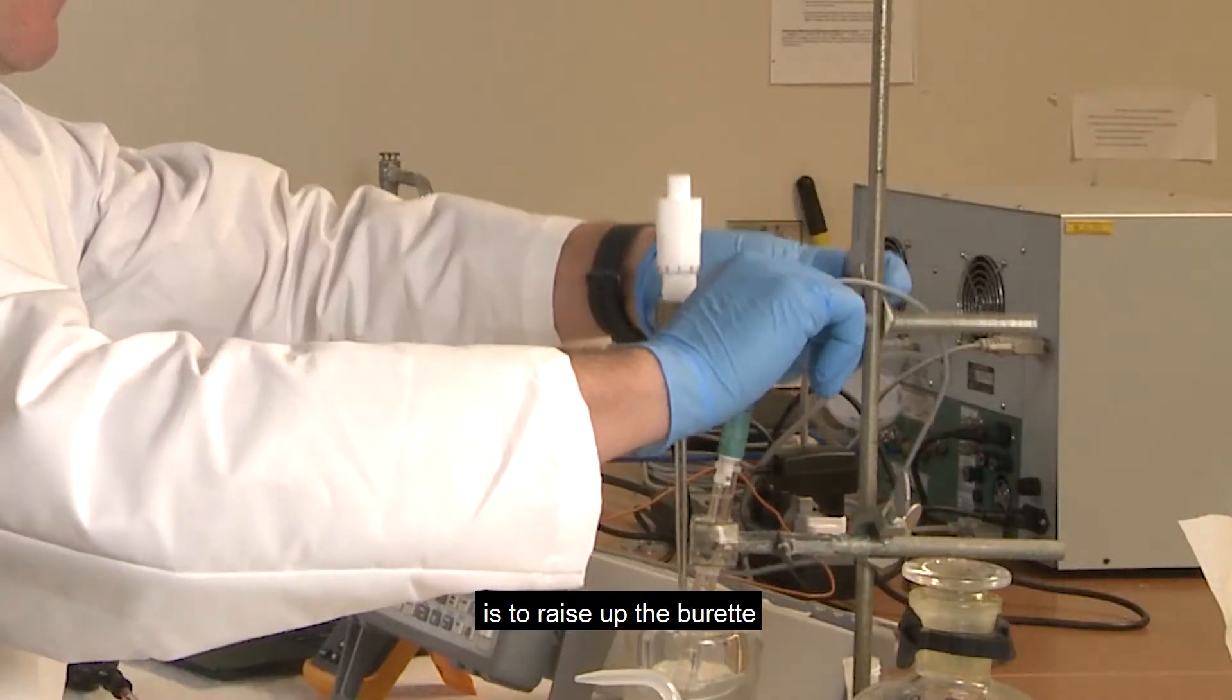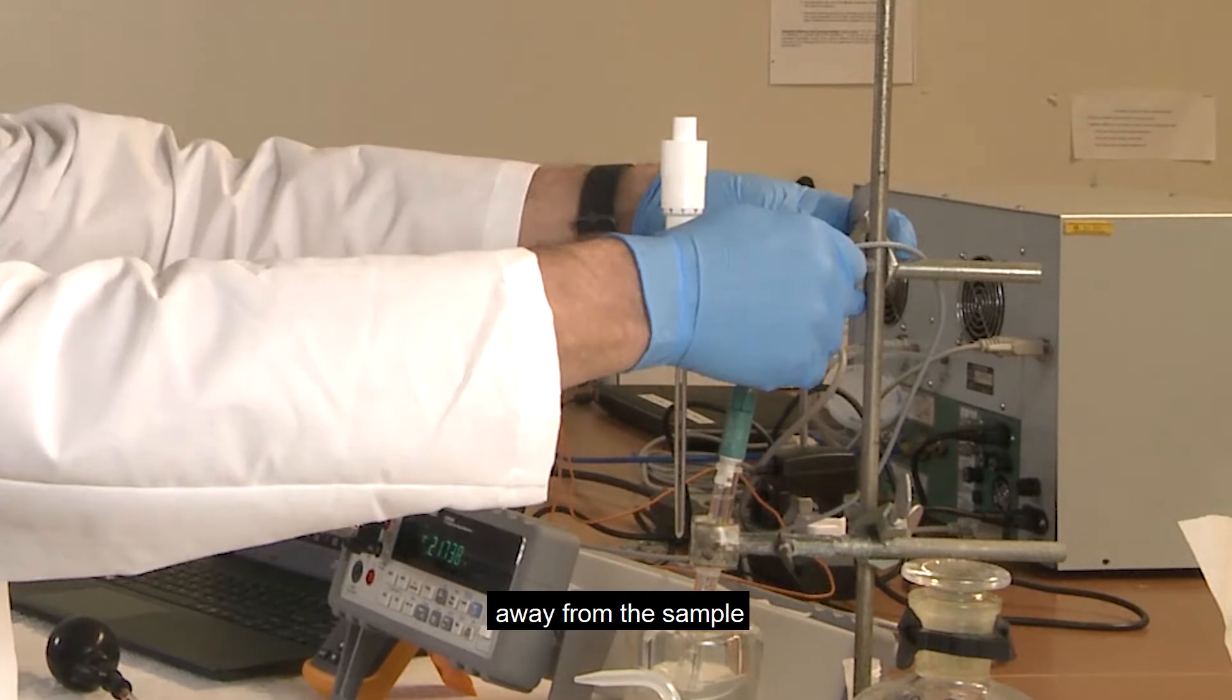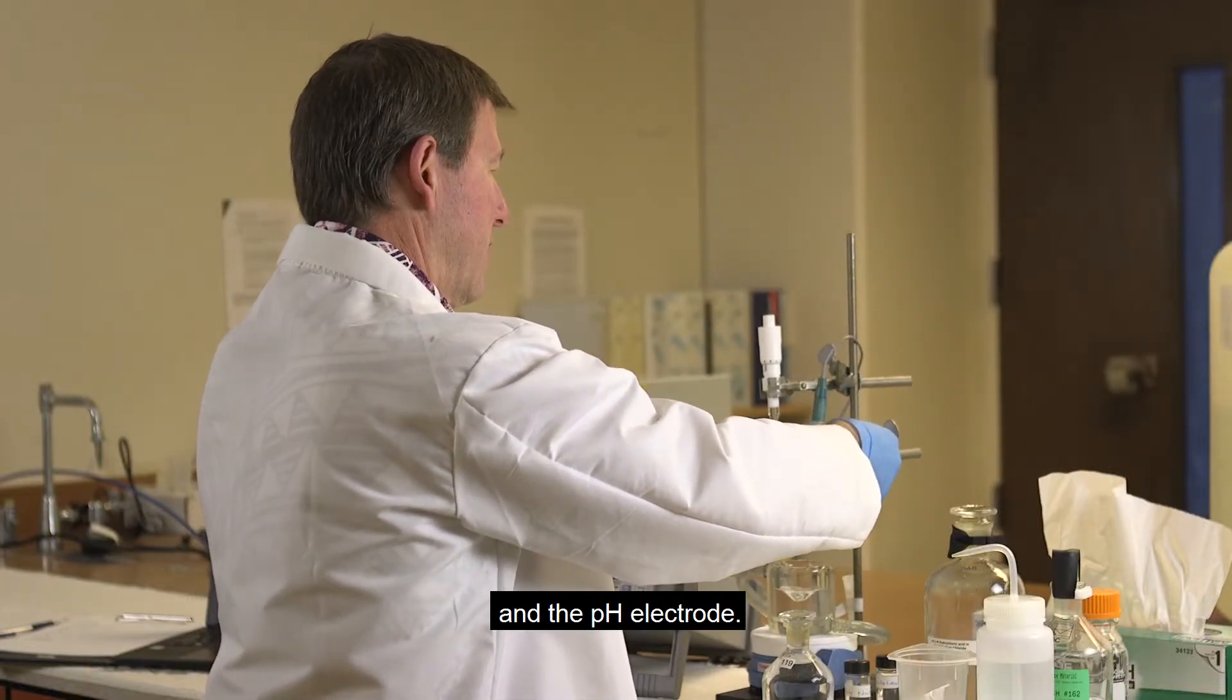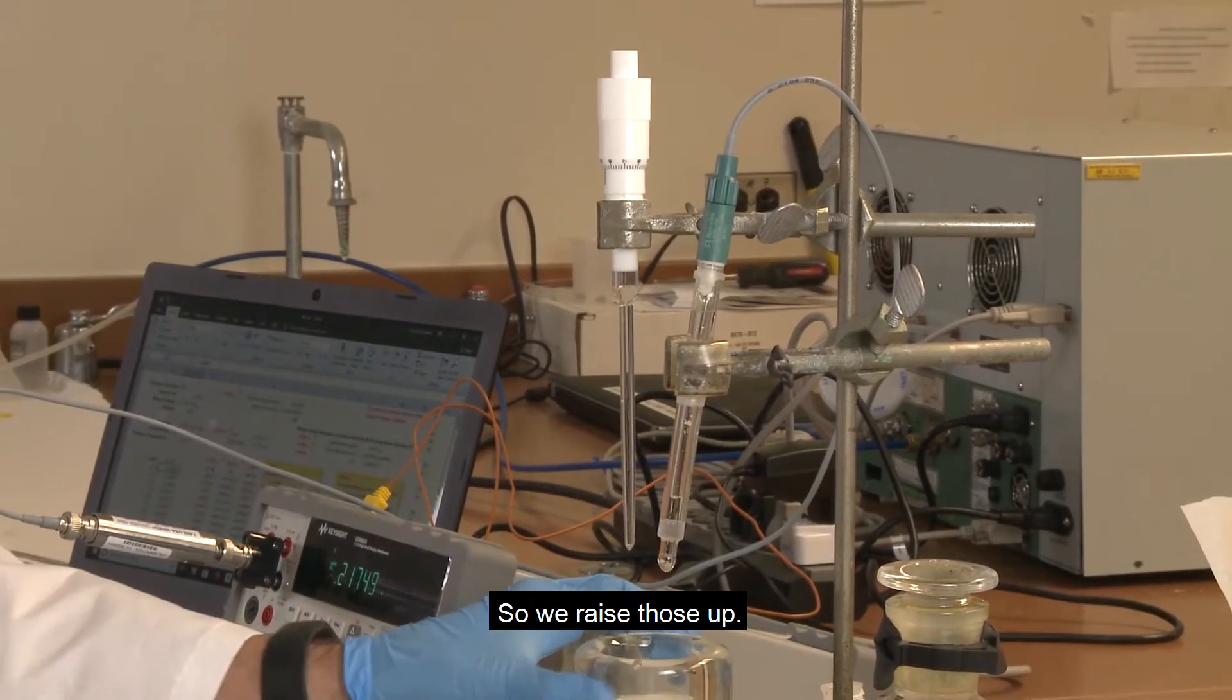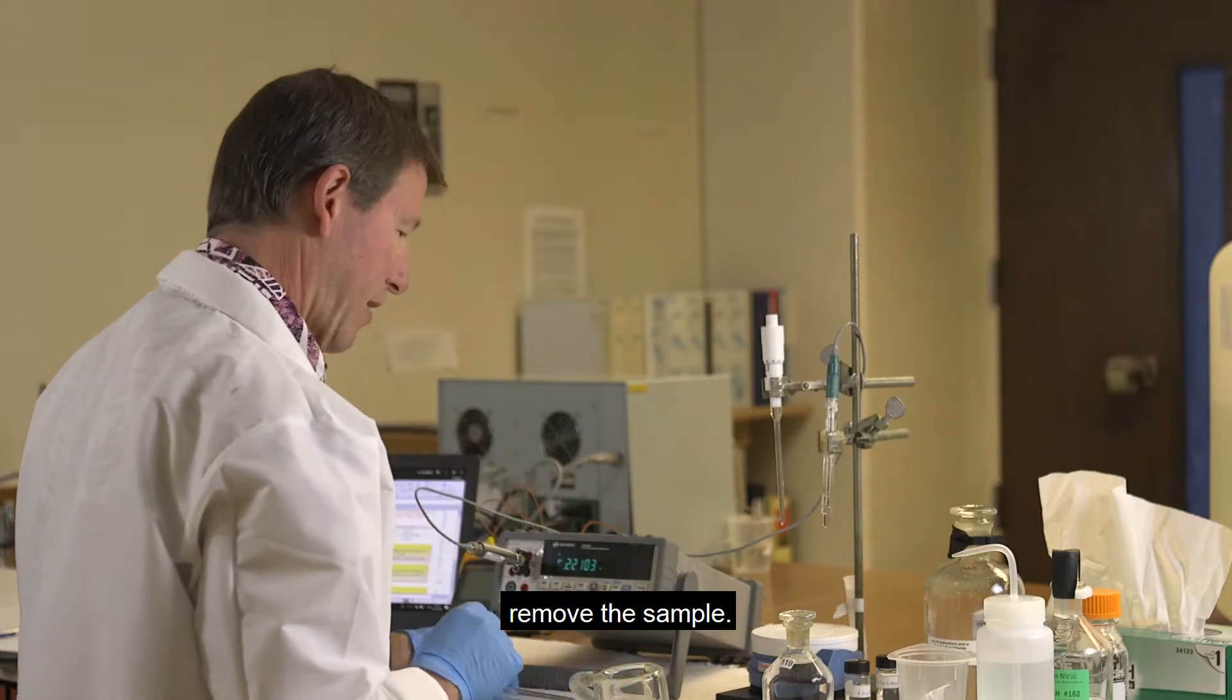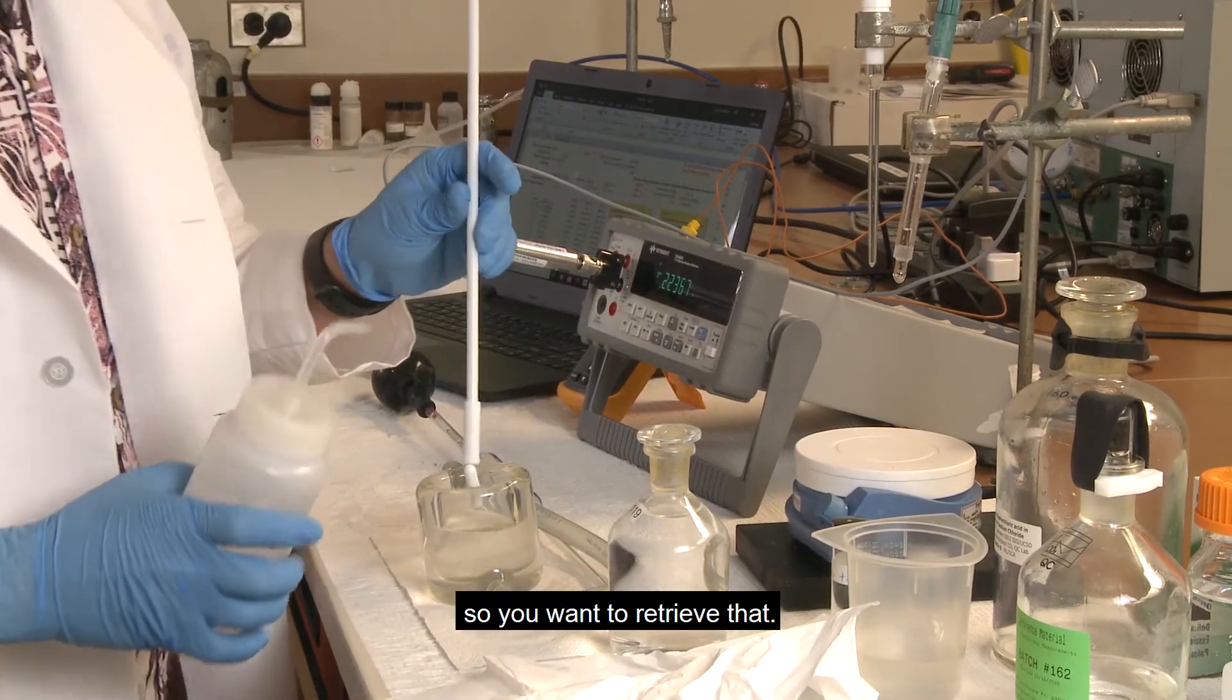The first thing we want to do is to raise up the burette away from the sample and the pH electrode. So we raise those up. Then we will remove the sample. You've got the stir bar in there, so you want to retrieve that.